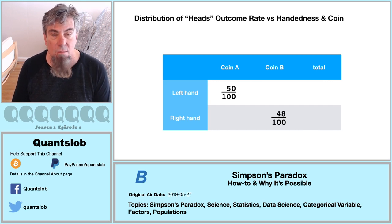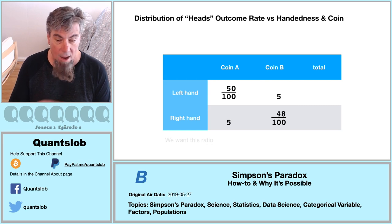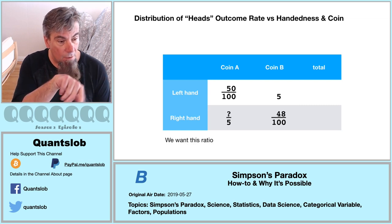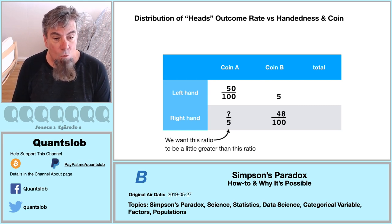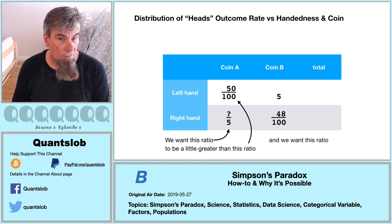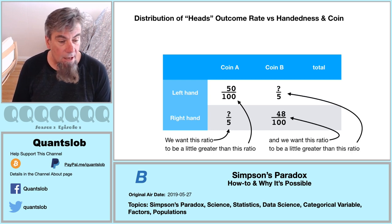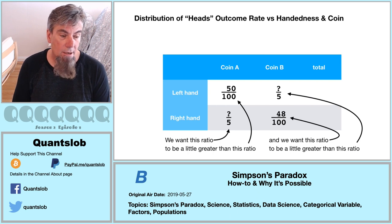We have 10 flips whose outcomes haven't been described yet. We'll split this in half and enter fives on the other diagonal. For coin A, we're looking for a numerator that makes the right-hand proportion of heads a little greater than that of the left hand. For coin B, we want a numerator that makes the left-hand proportion of heads a little less than that of the right hand.